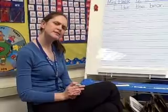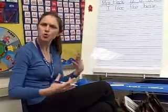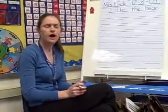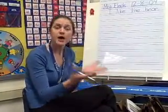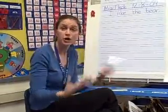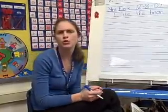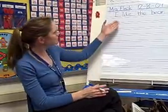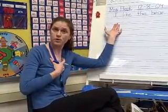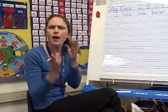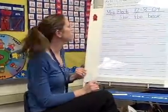All right, kindergarten friends, today in our writing we are going to be talking about adding more details to our writing — about making our writing more interesting by giving our reader more information, more things to know about what we're talking about. I've taken some writing that I've seen in many of your journals and that I've written for you before, and I'm going to show you how I can add more details to this writing.